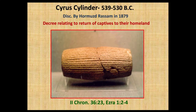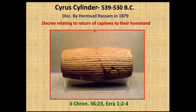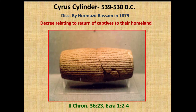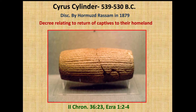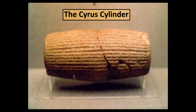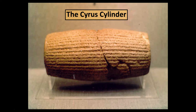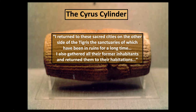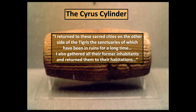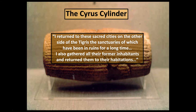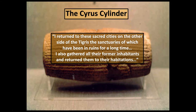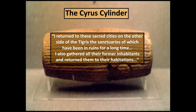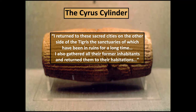The Cyrus Cylinder, dating from 539 to 530 BC, was discovered in 1879, and it records the policy of Cyrus to return captives to their land. We can read about this same event in 2 Chronicles 36 verse 23. From the Cyrus Cylinder, Cyrus says: 'I returned to these sacred cities on the other side of the Tigris, the sanctuaries of which have been in ruins for a long time. I also gathered all their former inhabitants and returned them to their habitations.' So it was the policy of the Persians, and Cyrus in particular, to return captives back to their former lands, and the Jews were returned to Jerusalem, though some chose to stay in Babylon.